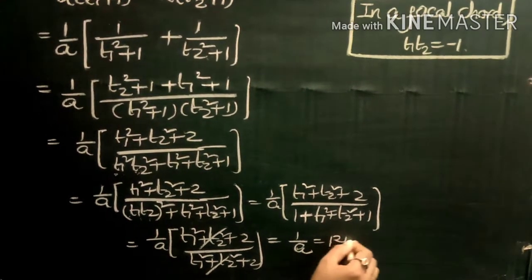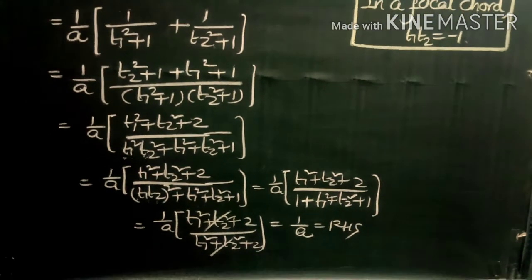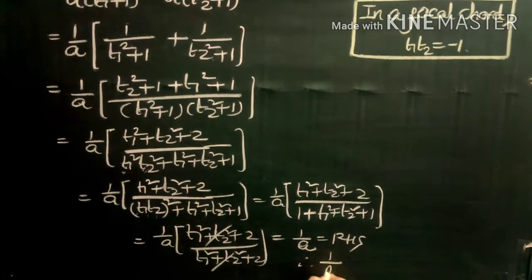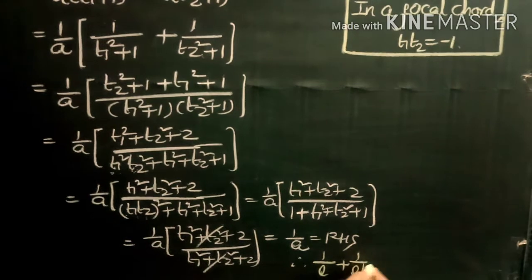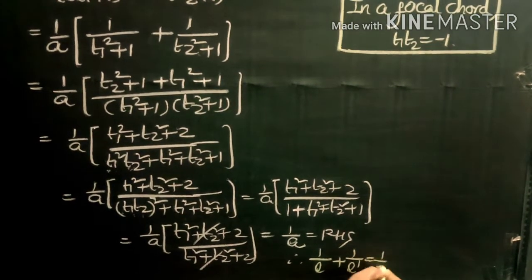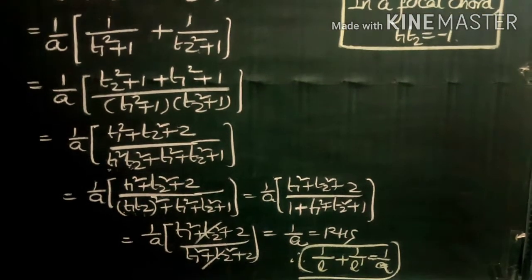The answer equals 1/a, which is the RHS. Therefore, 1/L + 1/L' = 1/a. That is the required result.